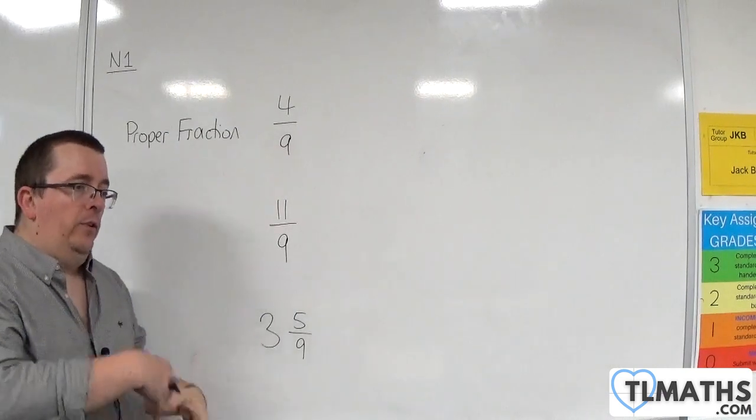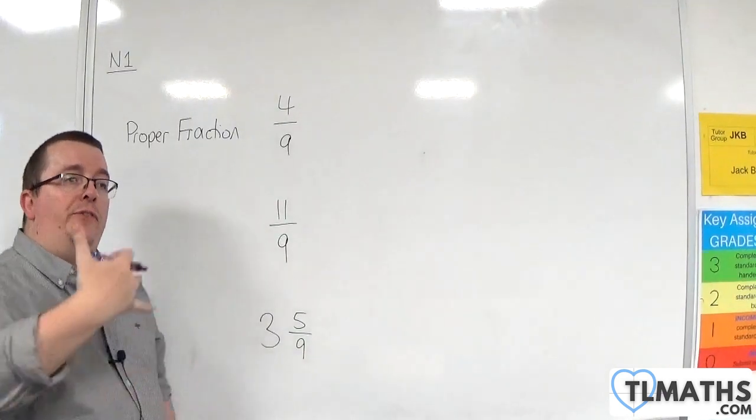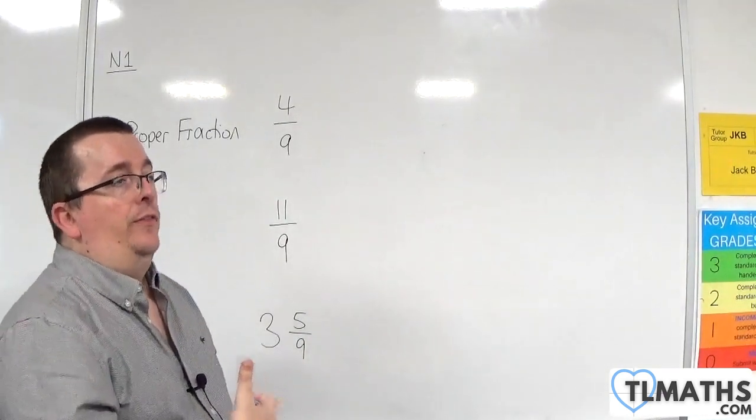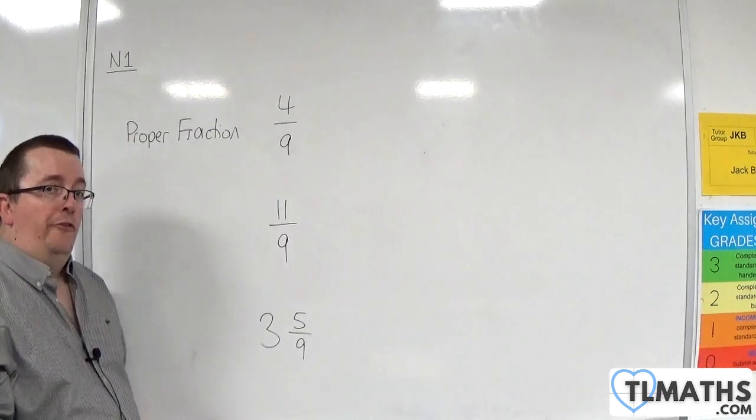So 1 ninth, 2 ninths, 3 ninths, 4 ninths, 5 ninths, 6 ninths, 7 ninths, and 8 ninths are proper fractions.